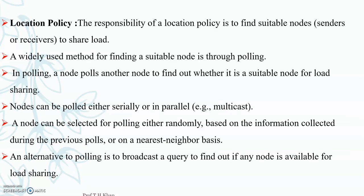Next is the location policy. This policy is responsible for finding a suitable node to share the load. Now that we know what are senders and what are receivers, they find who is suitable for load sharing by two methods: polling or broadcasting a query. Broadcasting a query means they broadcast to find out if any node is available for load distribution. For polling, a node polls another node to find out whether it is a suitable node for load sharing. Nodes can be polled either serially or in parallel. A node can be selected for polling either randomly, based on information collected during a previous poll, or by nearest neighbor — meaning adjacent nodes.